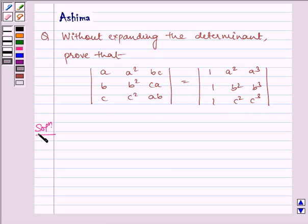Now let us write the solution. Let us consider the LHS. We have the determinant A, A square BC, B, B square CA, C, C square AB.